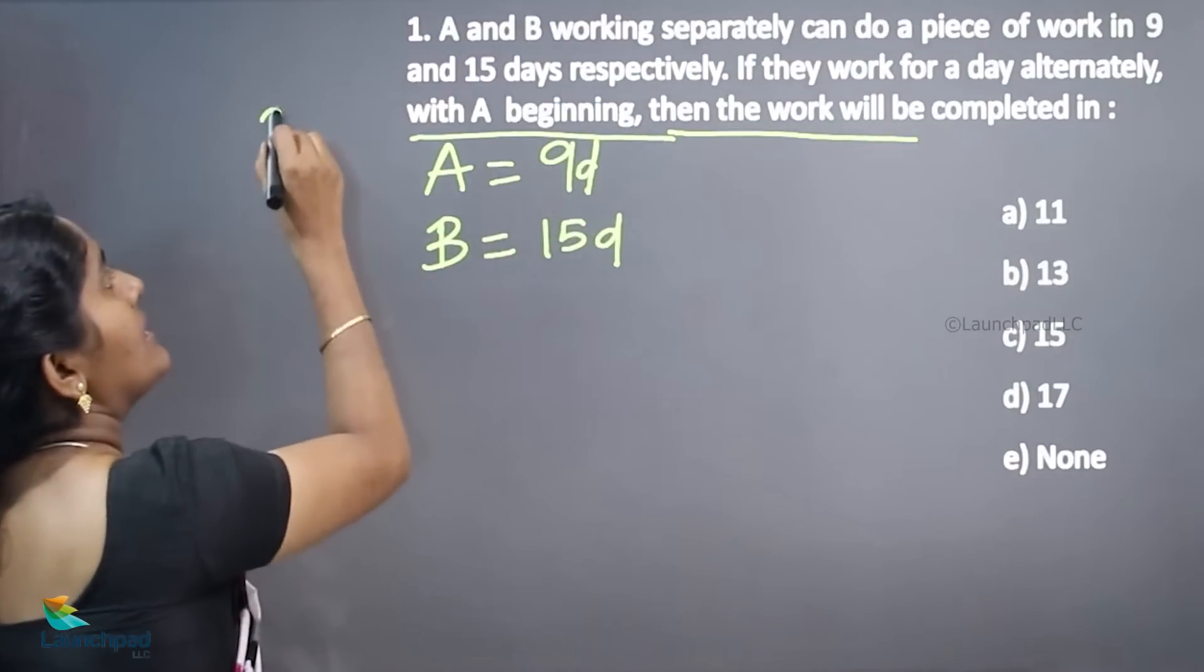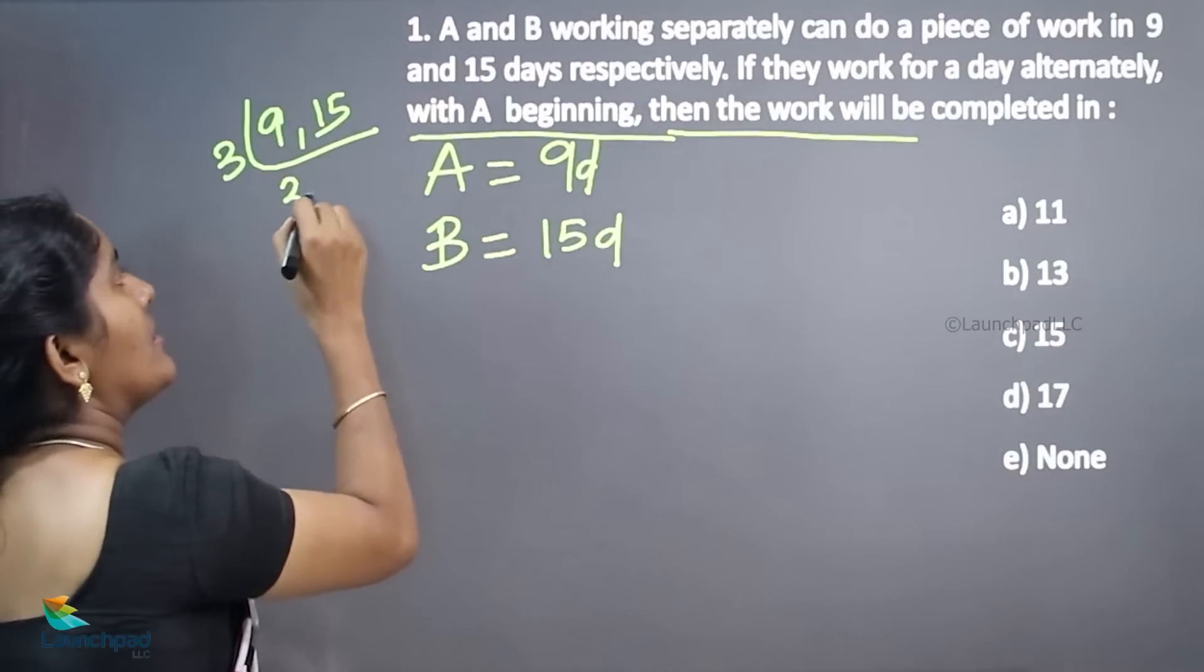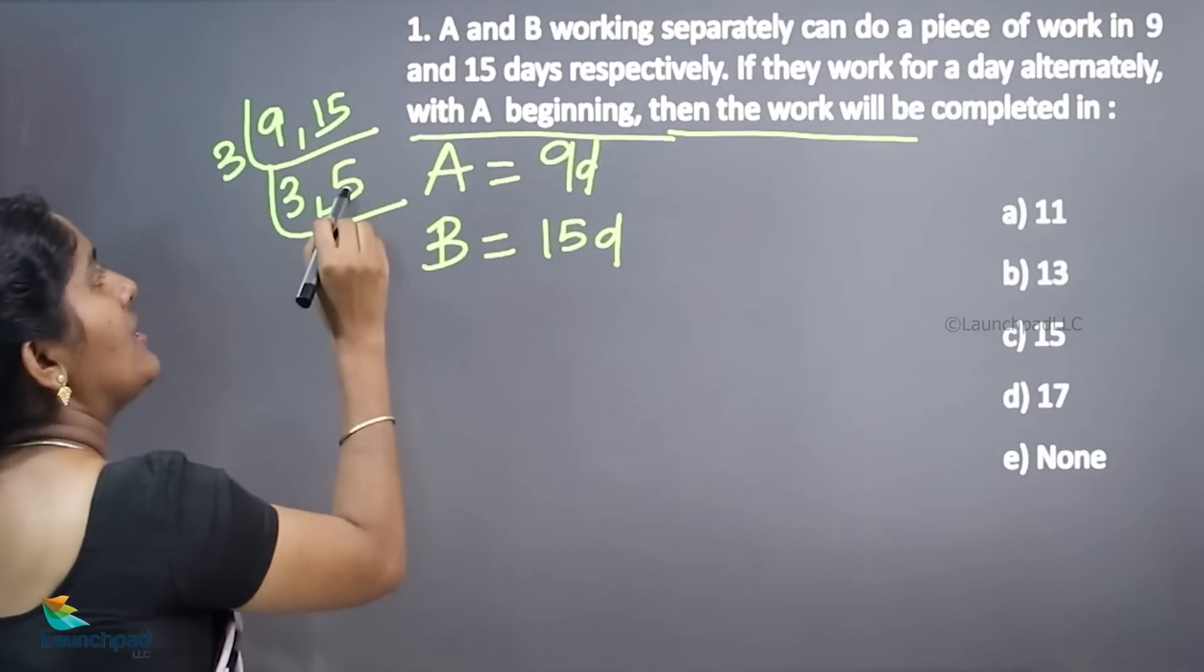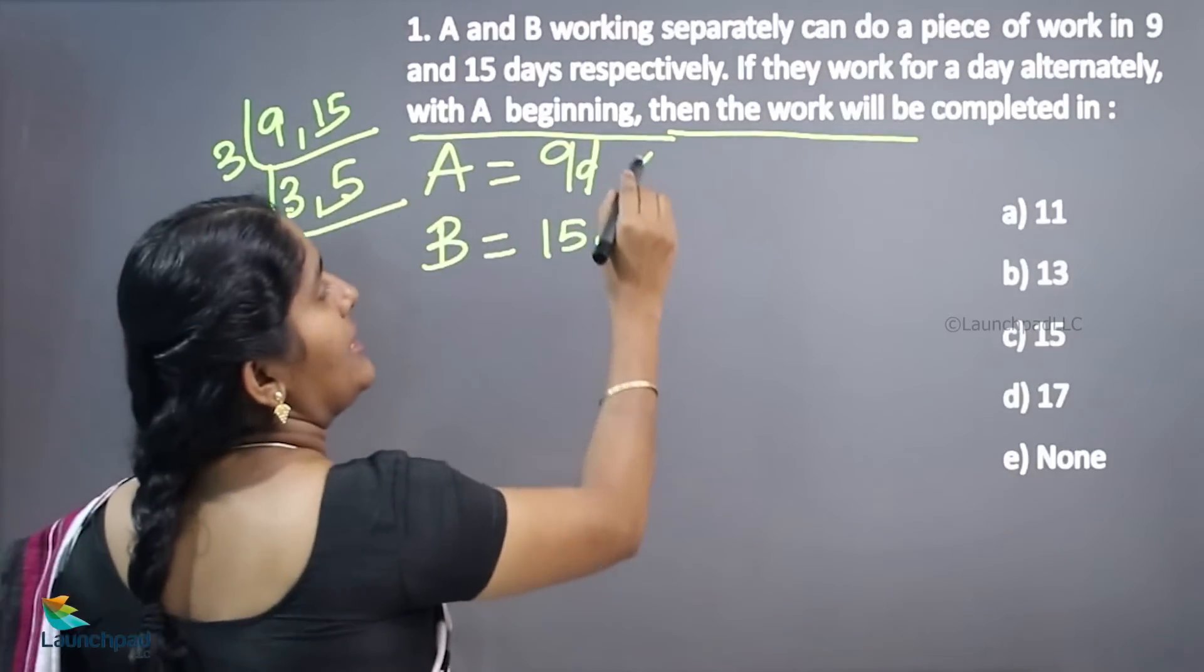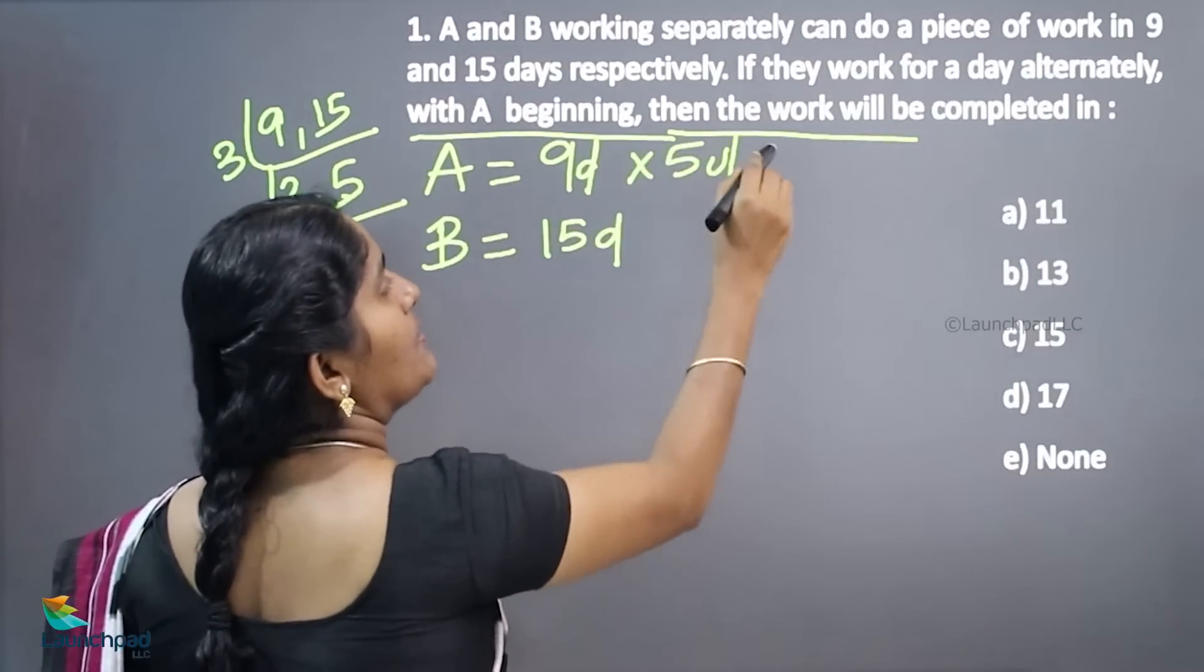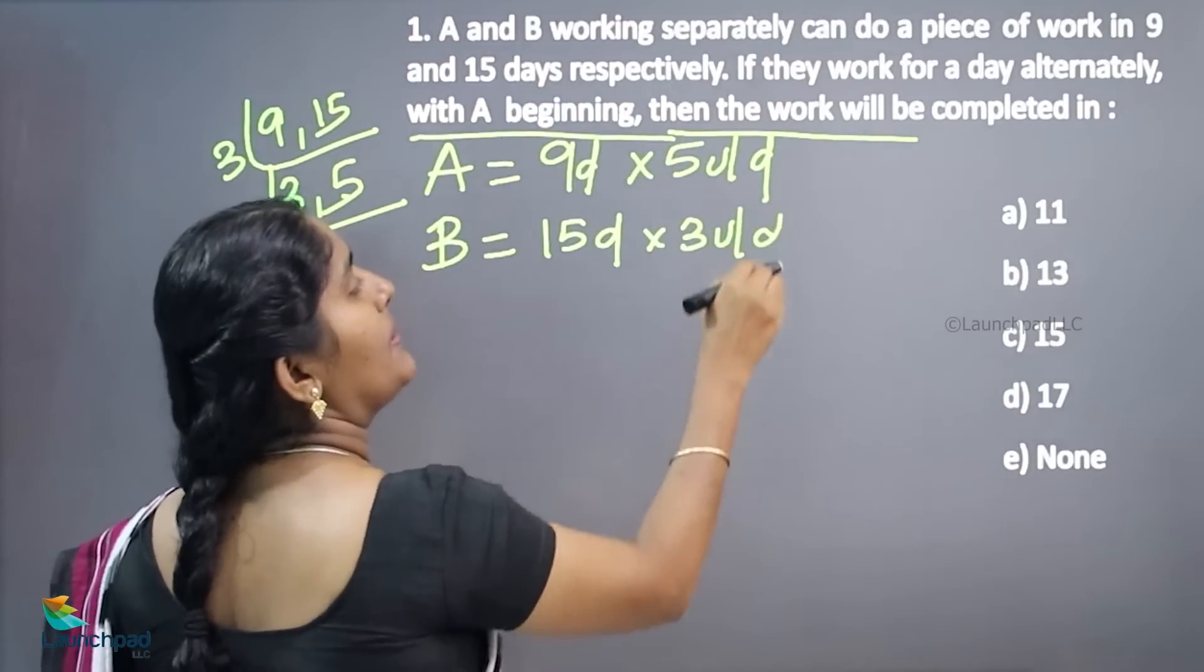As usual, you want to consider the LCM first. 3 times 3 is 9, 5 times 3 is 15, so 15 into 3 is 45. 9 into 5 gives 5 units per day. 15 into 3 gives 3 units per day.